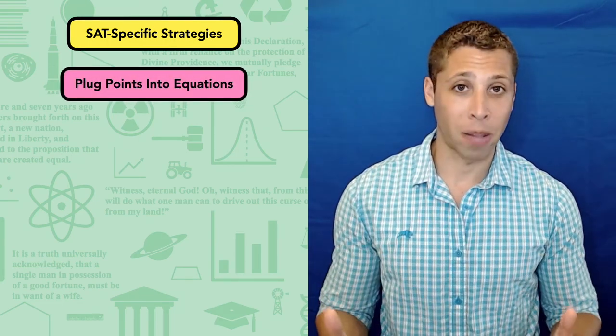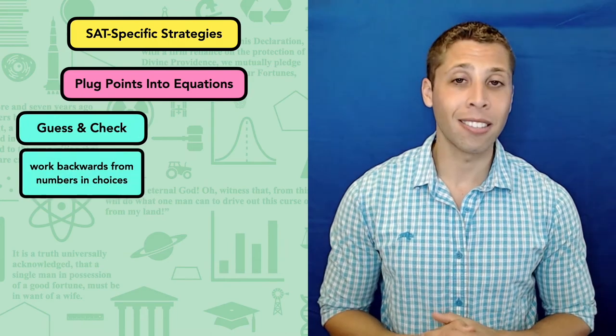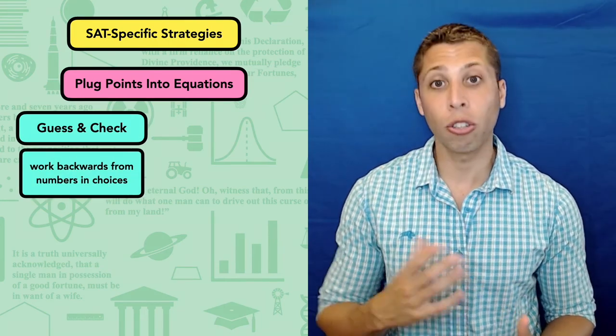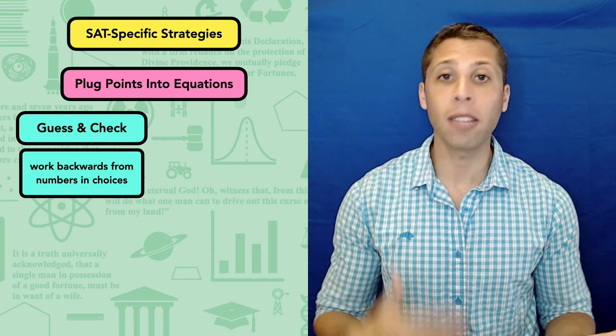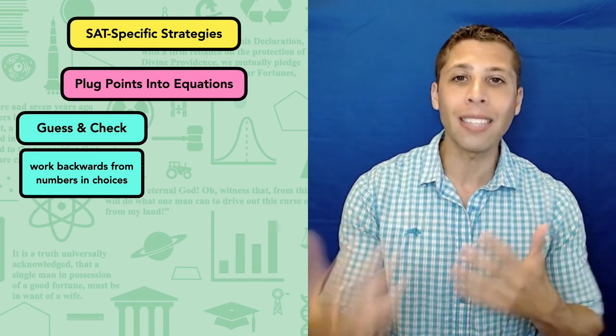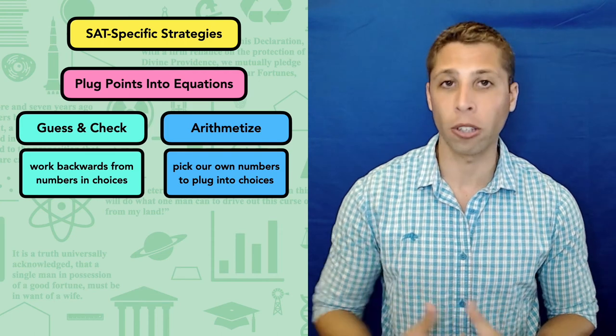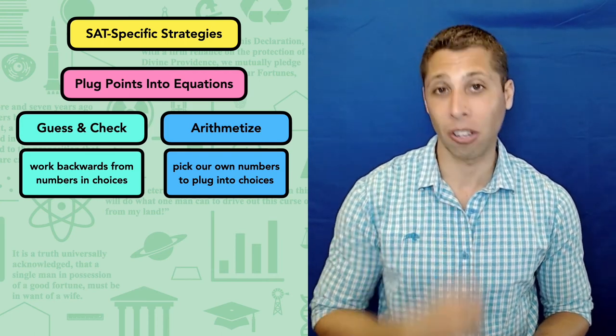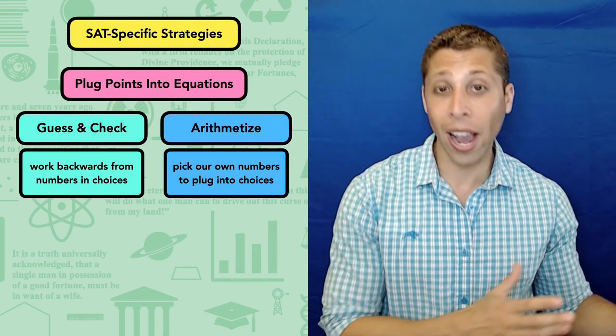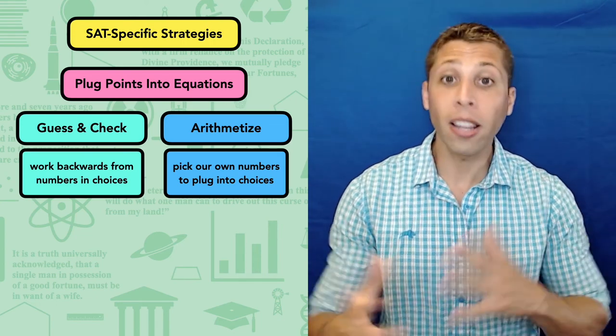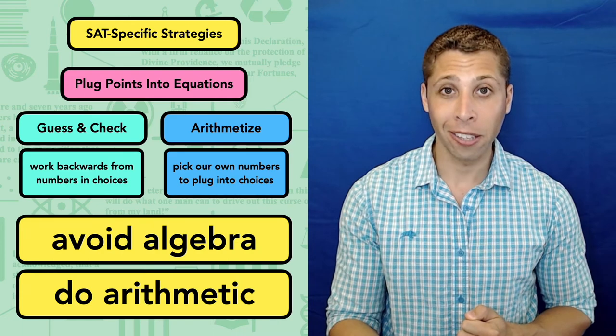Plug points into equations is self-explanatory. If you have points and you have equations, plug the points into the equations. Guess and Check probably isn't a new strategy, but it is very effective at stripping away the confusion of a question and letting you focus on one piece at a time. It's great for the SAT because most questions limit your possible answers, so we can simply test those possibilities. Arithmetize might seem new, but it works because of the same algebra rules that you learn in school. But unlike Guess and Check, we pick our own numbers to help us understand what's going on inside of an equation. Even though I talked about these three tools as individual strategies, they are very similar to each other. The lines between them are blurry. And that's because they all operate under the same principle.